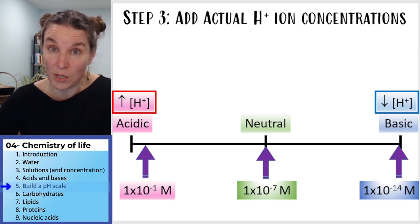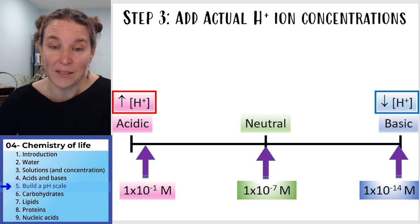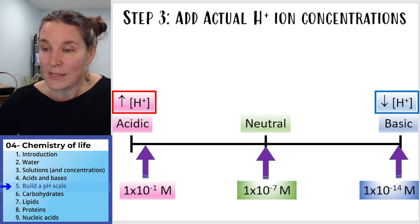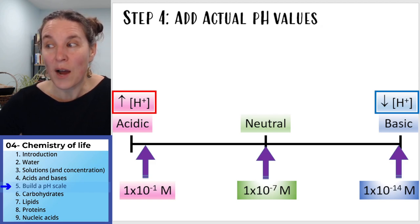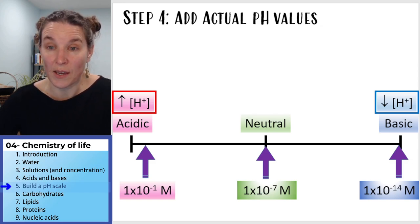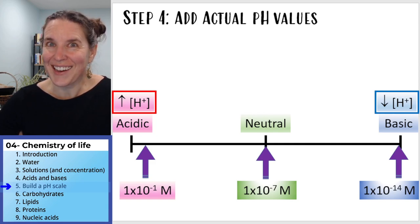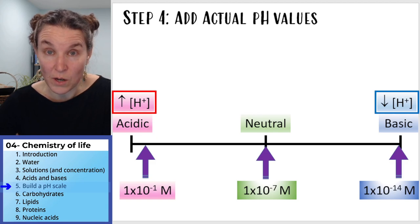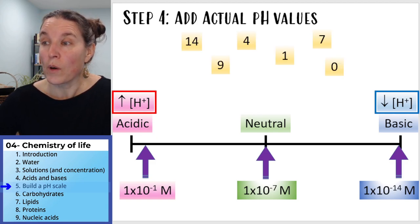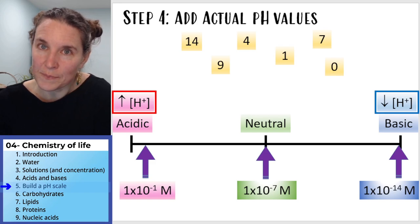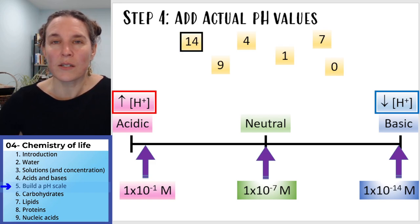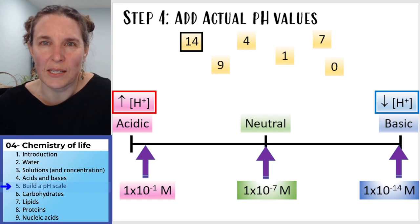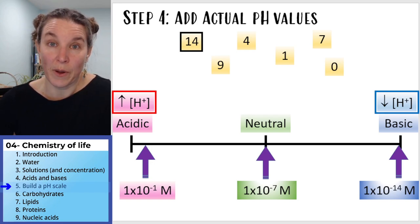Our numbers actually tell us information about the number of hydrogen ions. Now for step four: we're going to add actual pH values to our scale. Are you getting an idea of where those pH values are going to come from? Here is a pile of pH values — let's start with number 14.